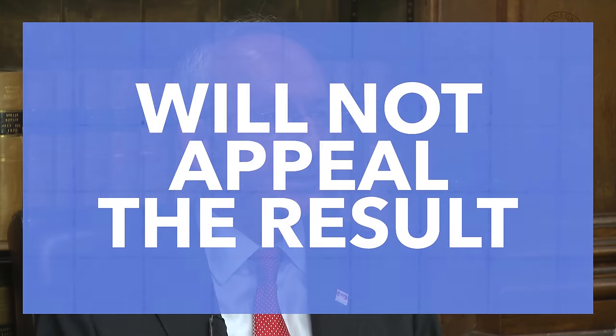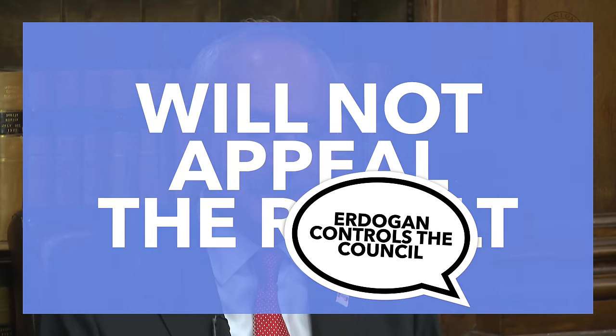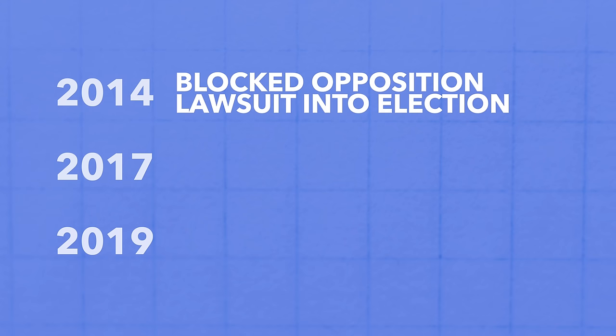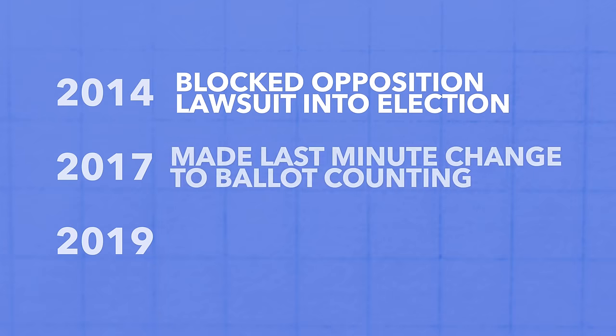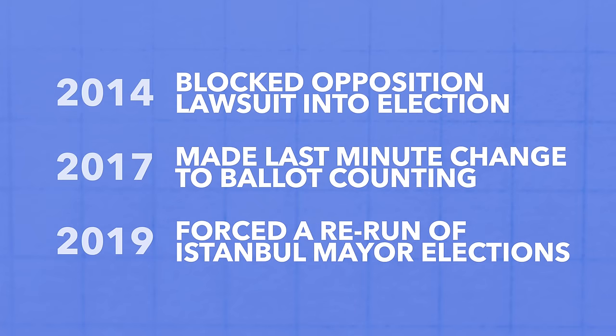The opposition candidate, Kemal Kilichdaroglu, has already said that he doesn't plan on appealing to the Supreme Electoral Council if he loses, because, in his words, it's controlled by Erdogan. This isn't a new phenomenon either. In 2014, Turkish courts blocked an opposition lawsuit into the Ankara mayoral election, which looked rigged. In the 2017 referendum, which Erdogan won with 51% of the vote, they made a last-minute change to how ballots were counted. And in 2019, they forced a rerun of Istanbul's mayoral election when it didn't go Erdogan's way.